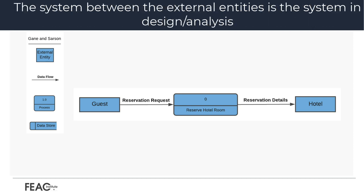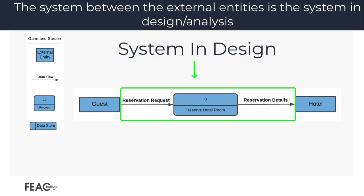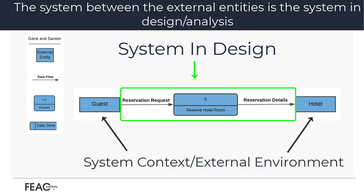Before we proceed, there are a couple of important concepts to be explained. First, when examining the current diagram, we should notice that a system boundary has been established as noted in the green box. The elements within the box are a part of the system in design or analysis. The elements outside of the box, specifically the external entities, provide the context for the system in design's operation.